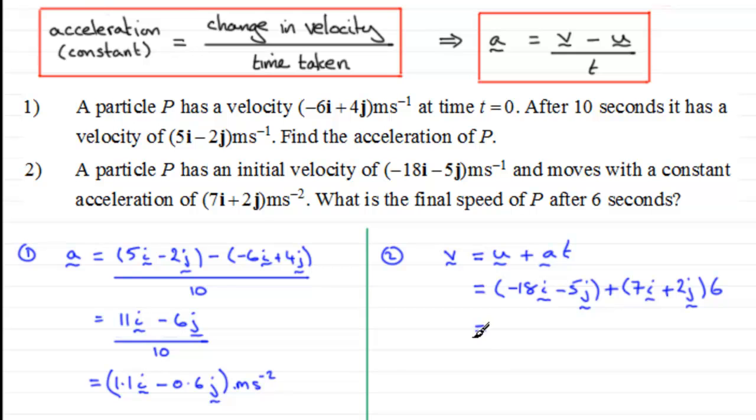So if we work this out, for the i components we've got -18, and 7 times 6 is 42, -18 and 42 comes to 24, so we've got 24 in the i direction. And as for the j component, we got -5, and then 2 times 6 is 12, that leaves us with 7j.